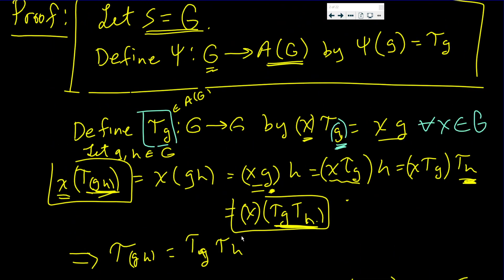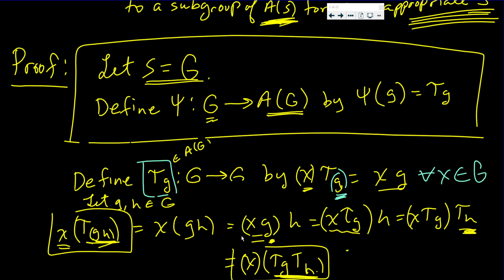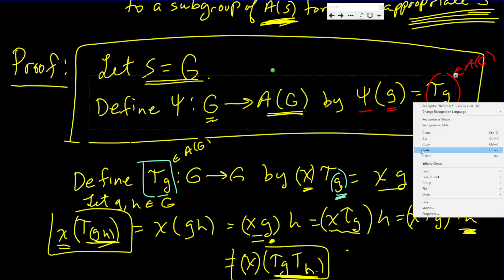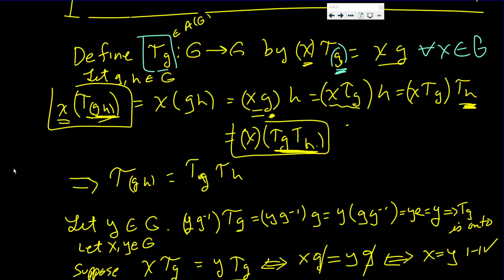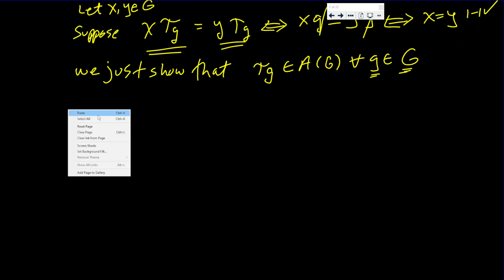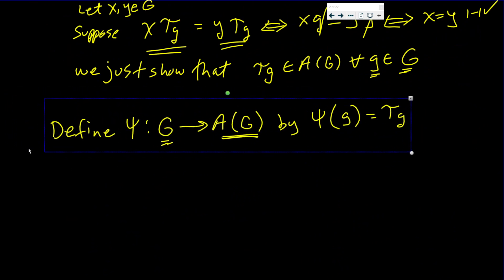So now, couple of things now. What φ maps to is in A(G). We just proved that. We just showed that τ_g is in A(G) for all g in the group. Why is that? Because we never said a word about g, little g, other than the fact that it lied in G. So now I can talk about this. We defined φ from G to A(G) by this definition.